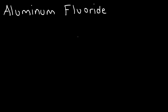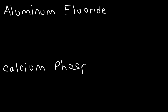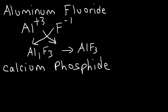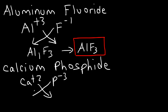Try these two problems: aluminum fluoride and calcium phosphide. Aluminum is a metal found in group 3A so it has a positive three charge. Fluoride is a halogen with a minus one charge, so using the same method it's Al1F3, or simply AlF3. For calcium phosphide, calcium has a plus two charge and phosphorus as an ion has a minus three charge. Switching the charges as subscripts gives Ca3P2.